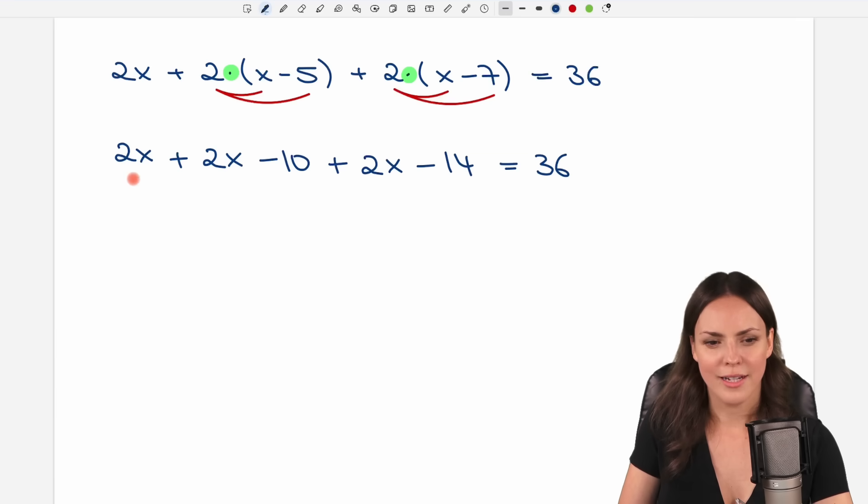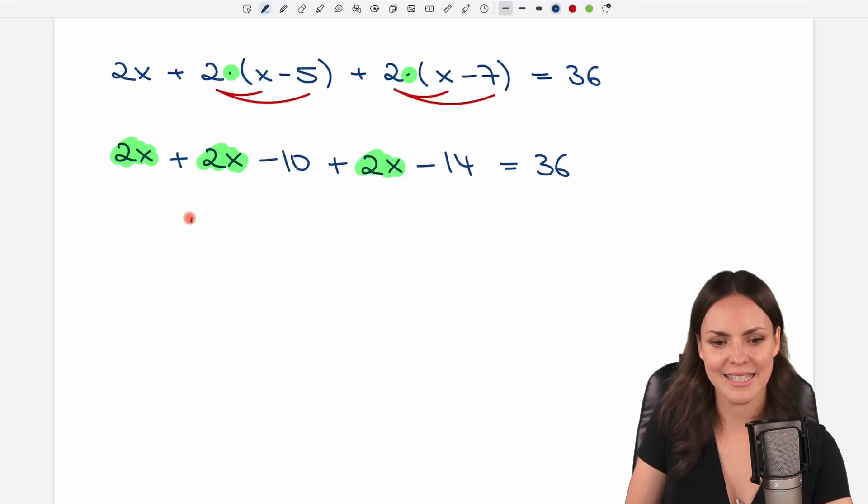Let's simplify a little bit. We have 2x plus 2x plus 2x which equals 6x in total and negative 10 minus 14 equals negative 24. And on the other side we have the 36.